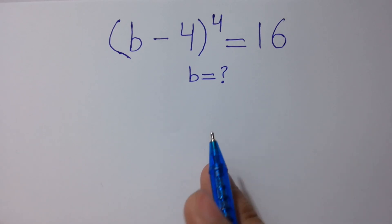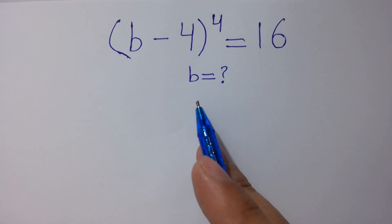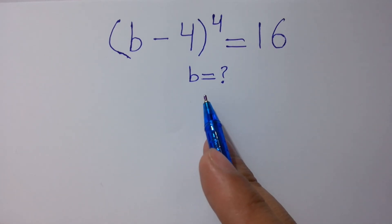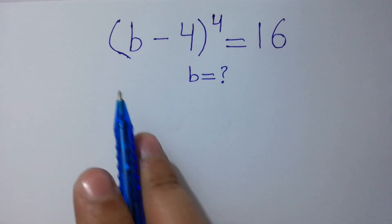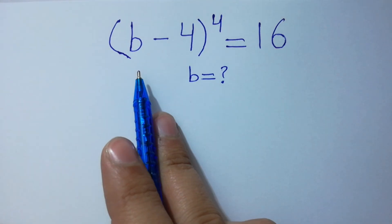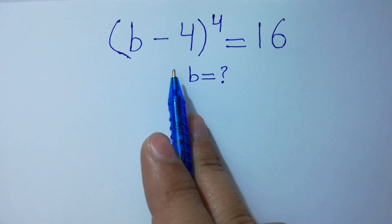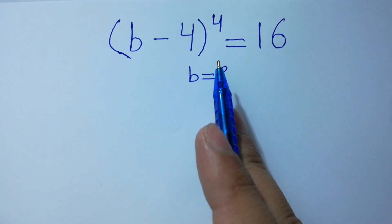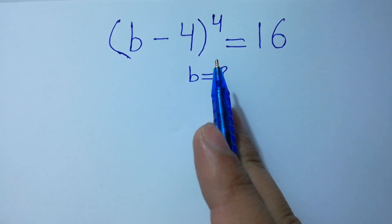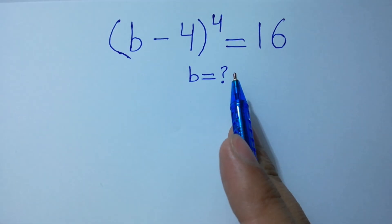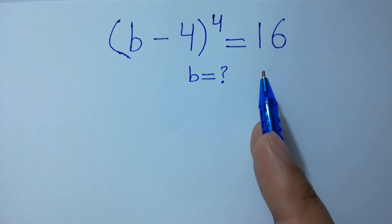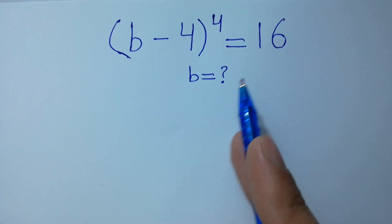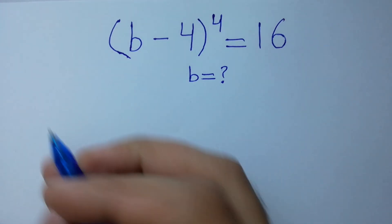Hello friends. Find the value of b if (b−4) to the whole power 4 equals 16. Let's have a solution.